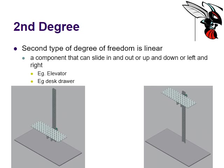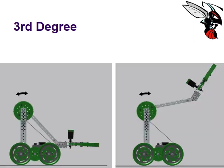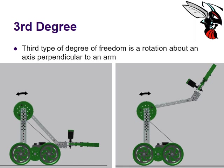The second degree of freedom is linear — like an elevator, which is a linear actuation system that can move up and down, raising a platform upon which you can lift something. A desk drawer is another example of a linear degree of freedom. The third degree of freedom is rotation about an axis perpendicular to the arm, like this pin around which the gear and attached arm rotate.